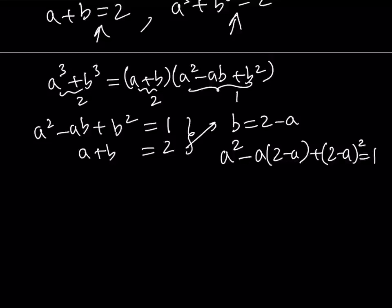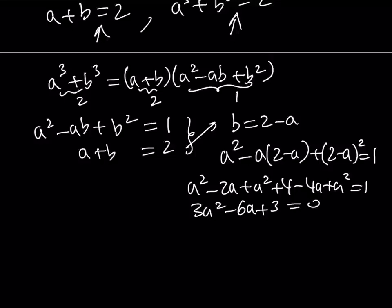Since it's in a single variable, we can solve it. This gives us A squared minus 2A plus A squared plus 4 minus 4A plus A squared equals 1. And if you add them all up, you get 3A squared minus 6A plus 3 is equal to 0,